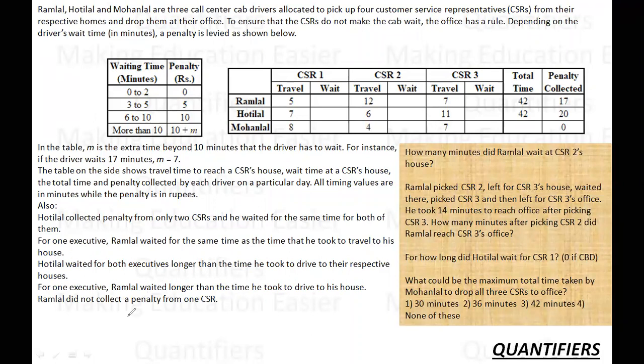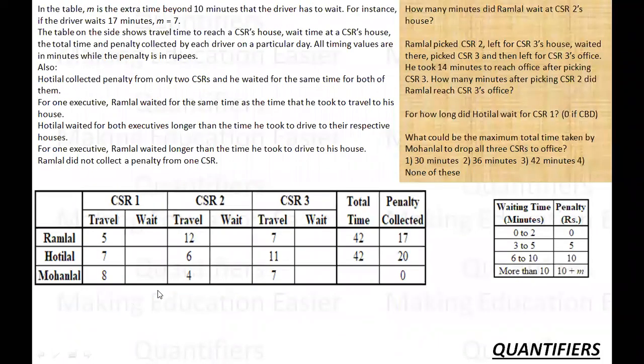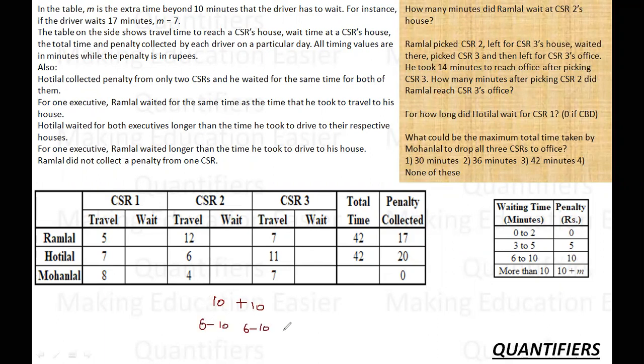So let us read them and try to sort each driver one by one. First it is given about Khotilal. Khotilal collected penalties from only 2 CSRs and he waited for the same time for both of them. So for 1, he did not collect any penalty. How much penalty has he collected? He has collected a total of 20 rupees. So since he has collected a total of 20 rupees and he has waited for the same time, therefore the fine must also be same. So he must have collected 10 rupees plus 10 rupees, which means that his wait time must be 6 to 10 minutes or 6 to 10 for Khotilal.